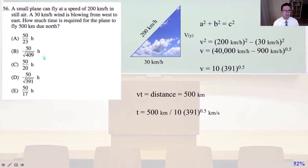56. A small plane can fly at a speed of 200 kilometers per hour in still air. A 30 kilometer per hour wind is blowing from west to east. How much time is required for the plane to fly 500 kilometers due north? So, let's look at our diagram. If we're flying in still air, that means we're flying with the wind not impacting us. So if the wind is going from west to east at 30 kilometers per hour, and we're flying at an angle theta that gives us a zero impact from the wind at 200 kilometers per hour, then our velocity in the y direction is what? Noting that we're going across C squared.